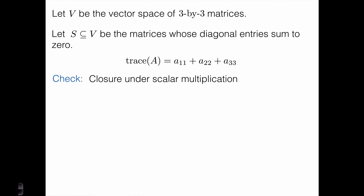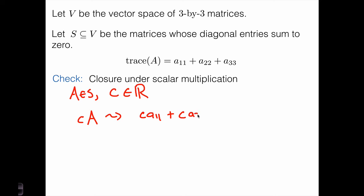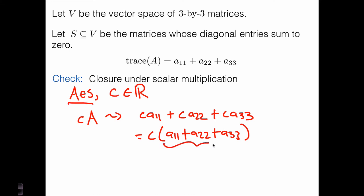Now let's check that S is closed under scalar multiplication. Say we have some matrix A in S and some real scalar C. The diagonal entries of C times A are C·A11, C·A22, and C·A33. Their sum equals C times (A11 plus A22 plus A33). Since A is in S, this sum equals zero, and C times zero equals zero. So C times A is in S as well. We've now checked all three conditions, and the subset of 3x3 matrices whose diagonal entries sum to zero is indeed a subspace.